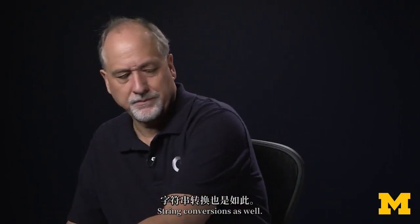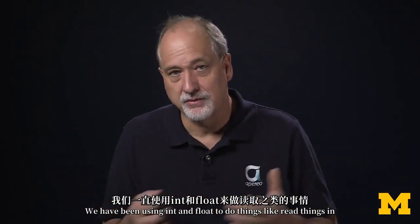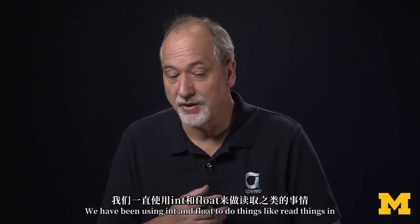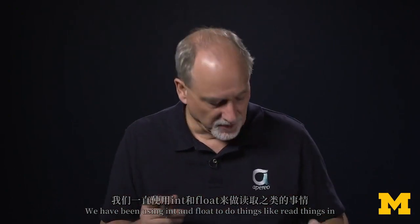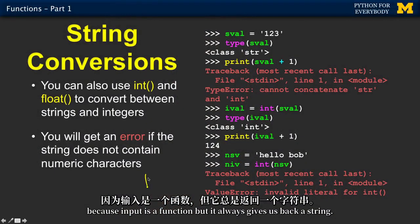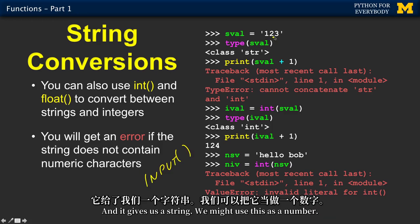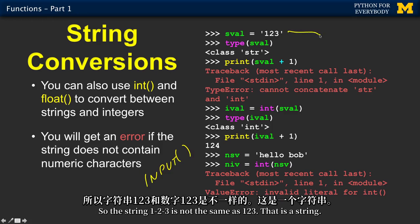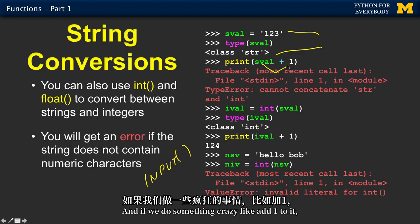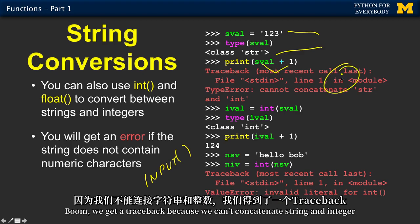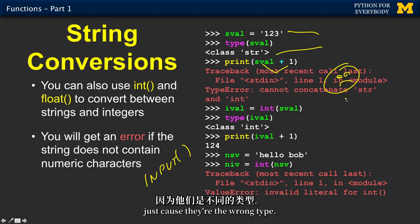String conversions as well. We have been using int and float to do things like read things in. Because input is a function, but it always gives us back a string. And it gives us a string. We might want to use this as a number. So the string 1, 2, 3 is not the same as 123. That is a string. And if we do something crazy like add 1 to it, boom, we get a trace back. Because we can't concatenate string and integer just because they're the wrong type.